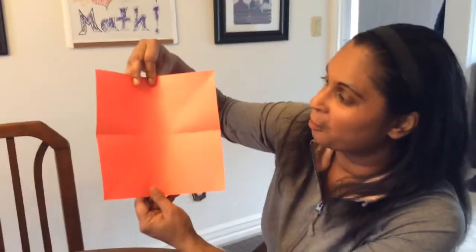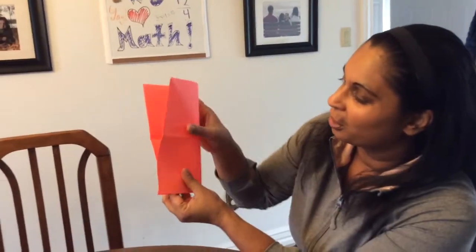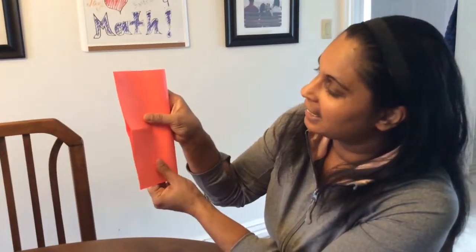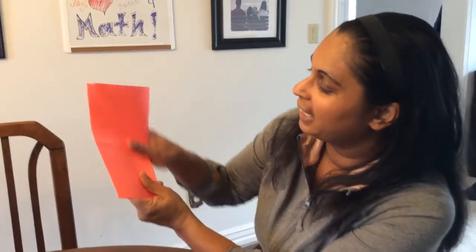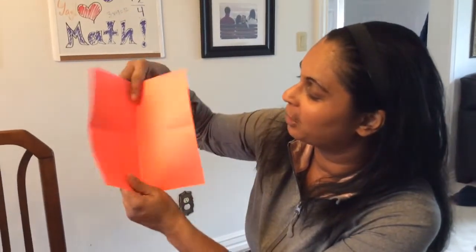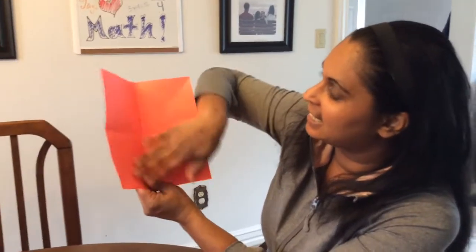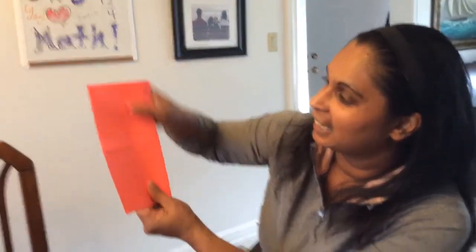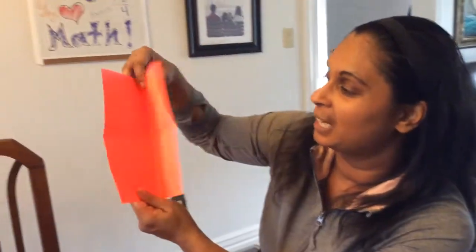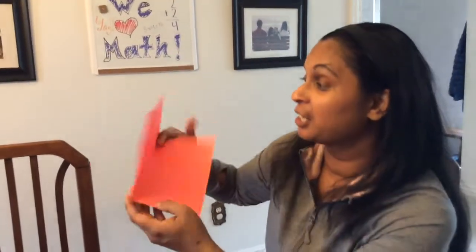I can also fold my shape this way and make a fold mark here, making sure I'm right in the middle, folding right in half. I can see that this side is the same as this side, and if I fold it, I can have matching parts. The folds match perfectly — so that's a good example of a symmetrical shape.